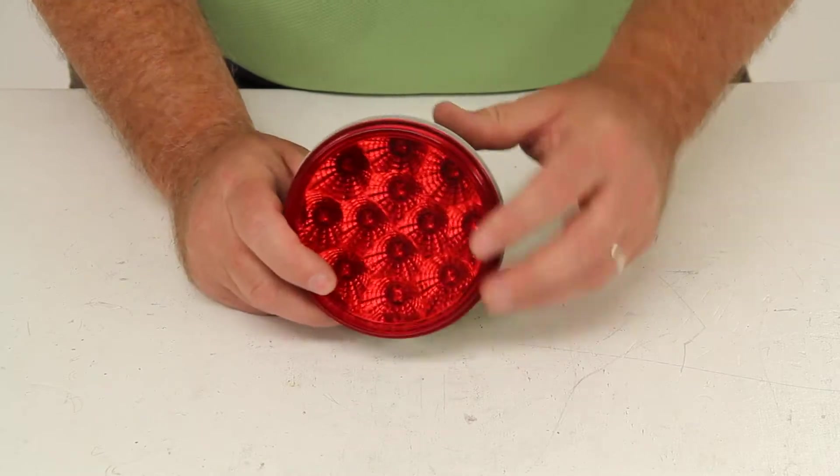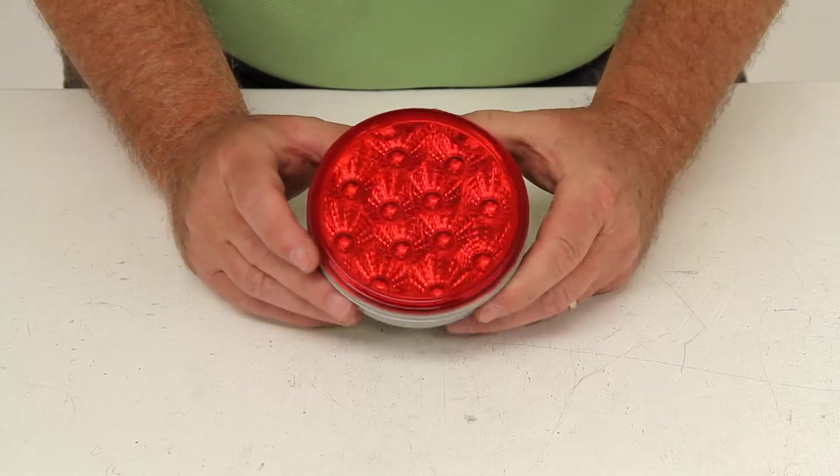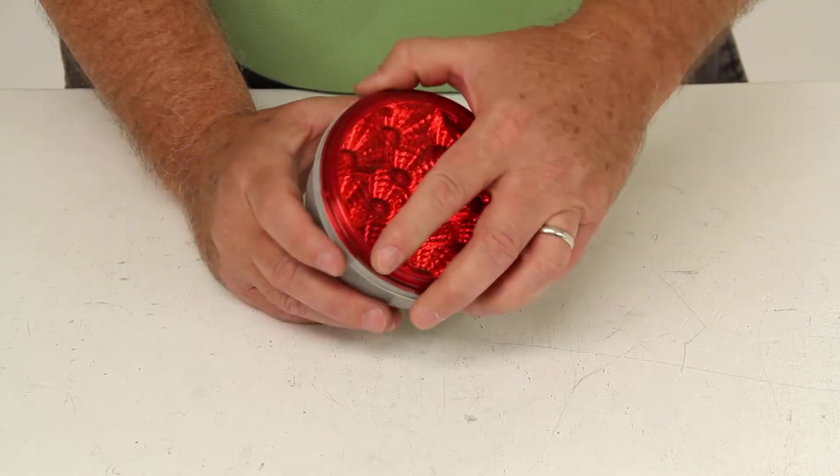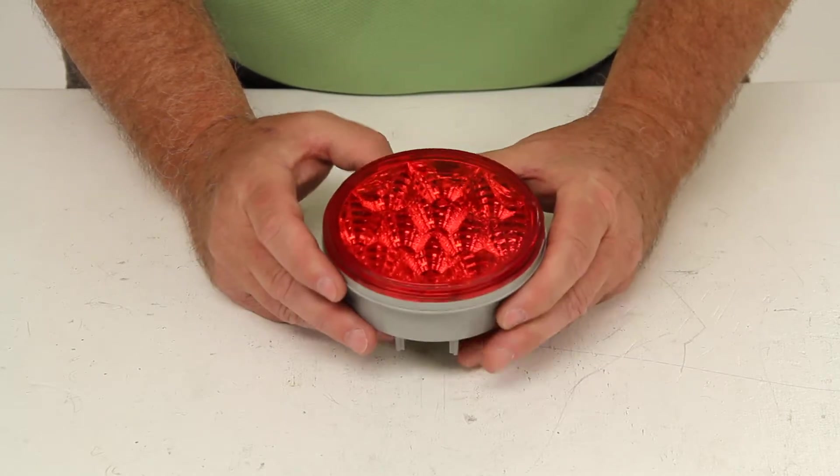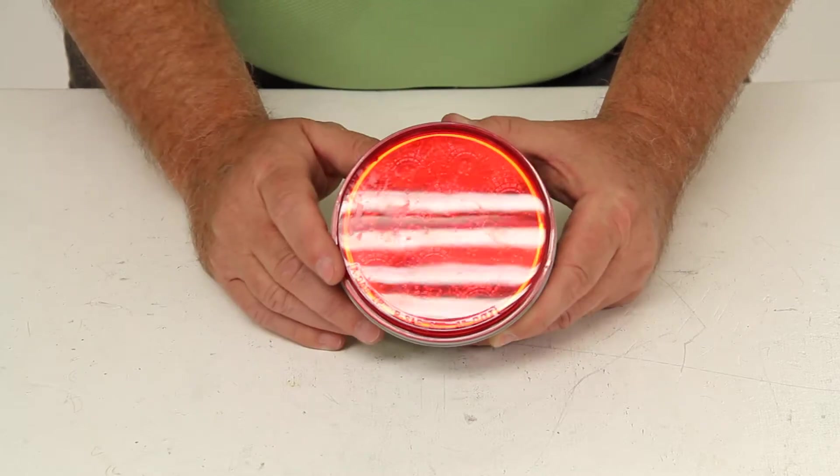This is a great replacement for incandescent lights because there's no bulbs to replace or brittle filaments. This is a sealed waterproof housing and lens. It is corrosion resistant. It does have 12 red LEDs and the lens is red also.